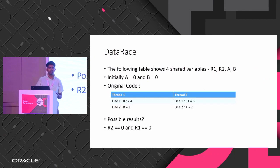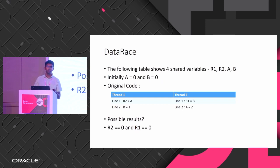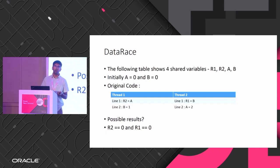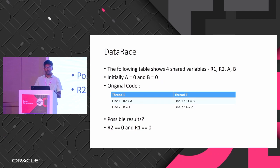What is a data race? When one thread is reading and another thread is writing the same variable — if your code requires you to read an updated value but the write happens after the read, you're reading a stale value. That's where a data race happens.